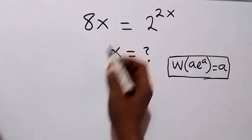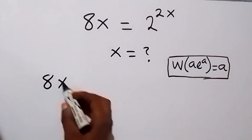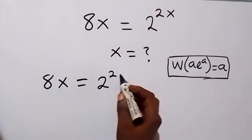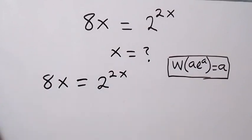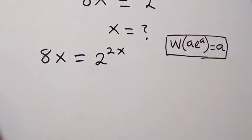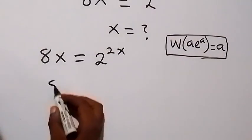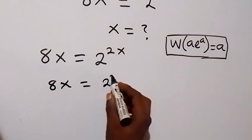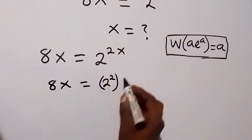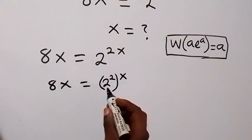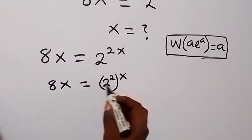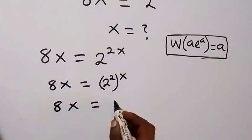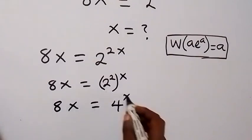From here, we have 8x equals to 2 raised to power 2x. We can write and separate this: 8x equals to 2 squared, then raised to power x. And 2 squared is 2 multiplied by itself 2 times, which is 4. So we have 8x now equals to 4 raised to power x.